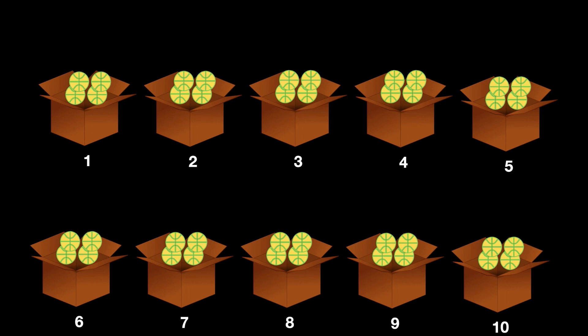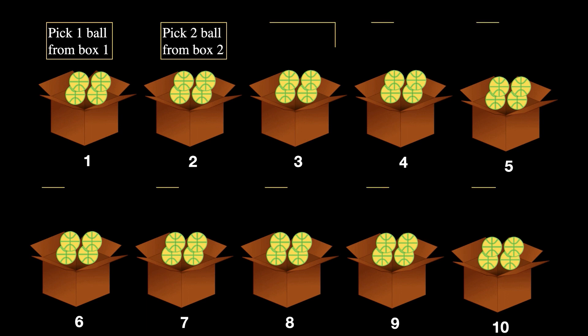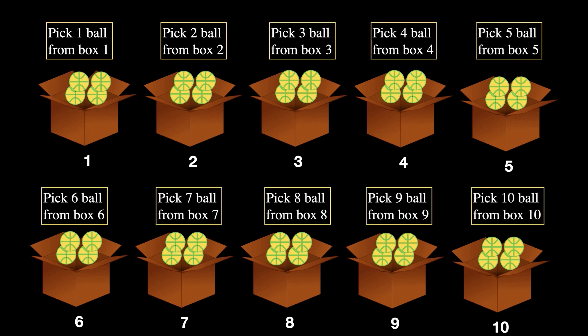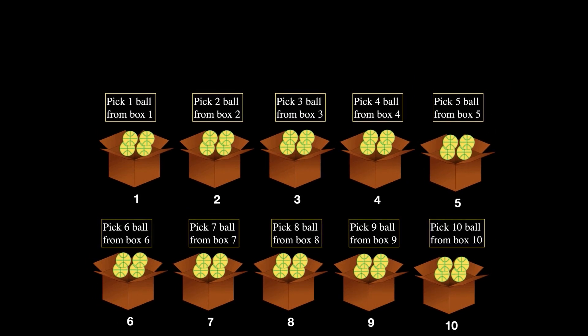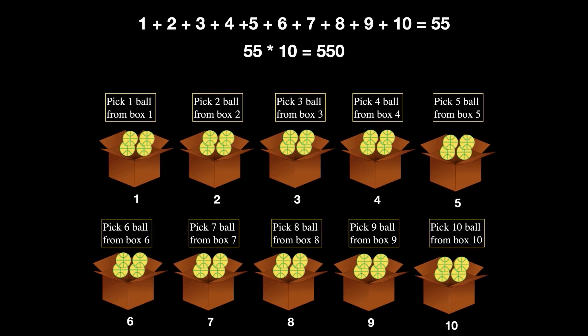The number of balls you pick from each box is equal to the box number. For example, pick one ball from box one, two balls from box two, three balls from box three, and so on, and finally 10 balls from box 10. In total you will have 55 balls. If all the boxes have good balls, the total weight would be 1+2+3+...+10 times 10, which equals 550 grams, since each ball weighs 10 grams.